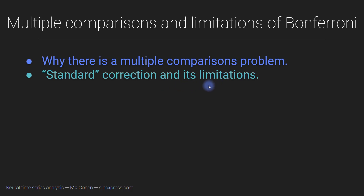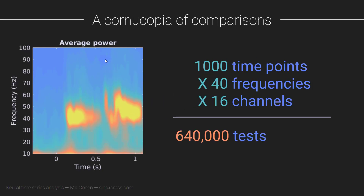First I want to illustrate the scale of the multiple comparisons problem. Consider a time frequency analysis where we have 1000 time points, 40 frequencies, and 16 channels — that gives us 640,000 individual tests, whether t-tests, correlations, or whatever statistical test we're doing. And that's a lowball estimate; if you have three experimental conditions and do two comparisons, you can easily have over a million tests.